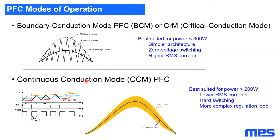The other mode is continuous conduction mode, CCM. The current does not return to zero at each cycle, resulting in a much lower ripple current and lower RMS current, with the current centered around the average input current. This makes CCM best suited for higher power. It is hard switching, and because of the CCM transfer function it is more complex to compensate the feedback loop, but it gives less power losses at higher power.